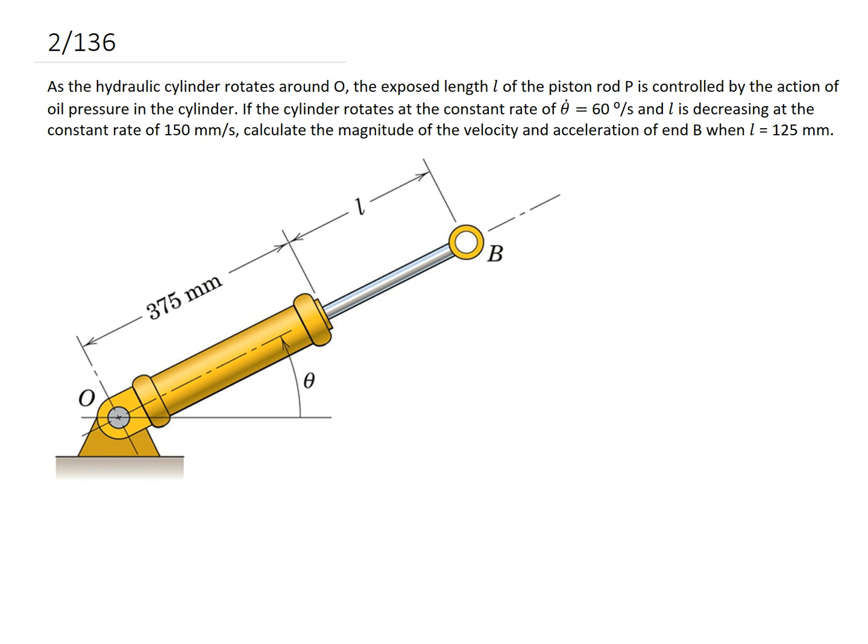So when we set it up, what we want to do is put the R direction in the direction of the extension or retraction. So in this case, it's going to be along the beam. So that's the R direction. Theta is then 90 degrees to that, so I'll put it here.